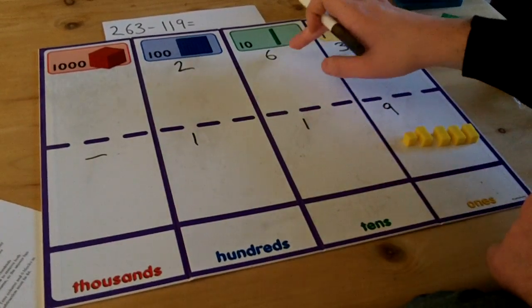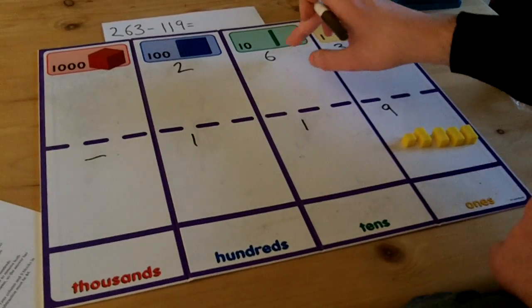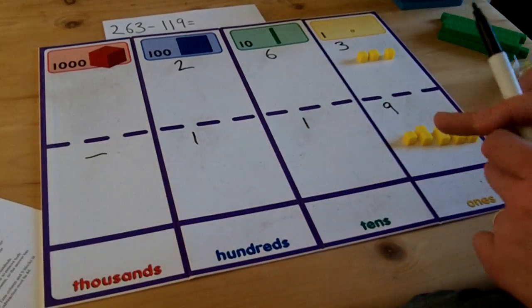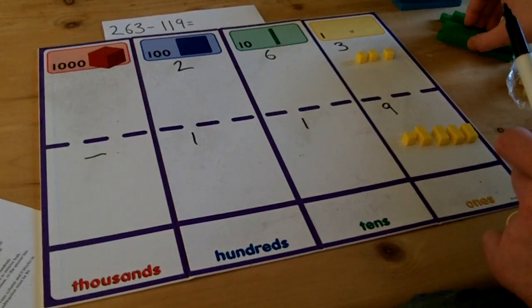In the tens column I have got 6 and 1. This represents 60 and 10, so I must use the rows of 10 cubes to show these numbers.